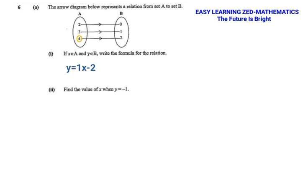Now that is the formula I've come up with, but it's not yet simplified. I'm going to write y is equal to — since 1x is the same as x, I can write y is equal to x minus 2. So the formula for this relation is y = x − 2.